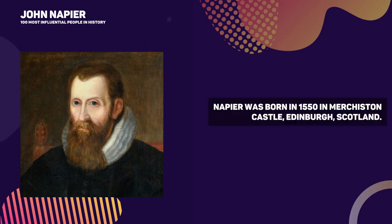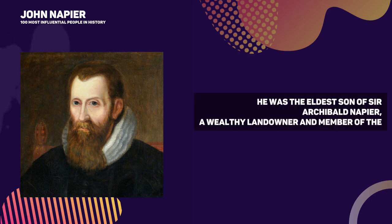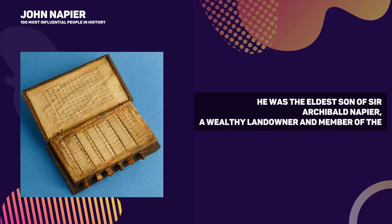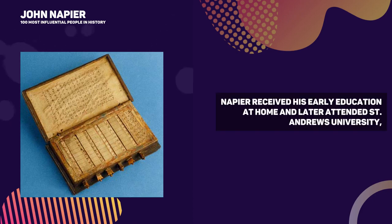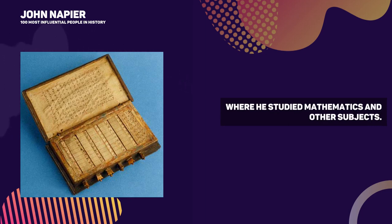Napier was born in 1550 in Murchiston Castle, Edinburgh, Scotland. He was the eldest son of Sir Archibald Napier, a wealthy landowner and member of the Scottish gentry. Napier received his early education at home and later attended St Andrews University, where he studied mathematics and other subjects.